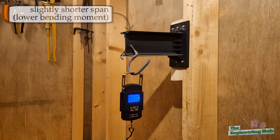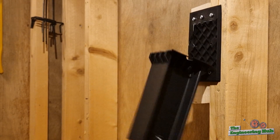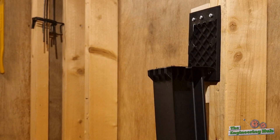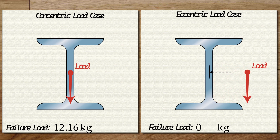At around 9.8kg, the beam pulled out of the base plate in what appeared to be a similar failure mode to the first beam, just at a load which was 15-20% smaller. So a small offset to the loading point of roughly half of the beam's width resulted in an 18% reduction in capacity. This may not seem like a lot, but depending on the section profile and loading configuration, the strength reduction could be much higher.